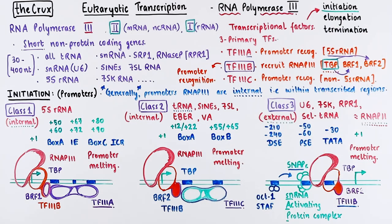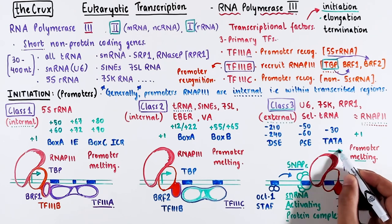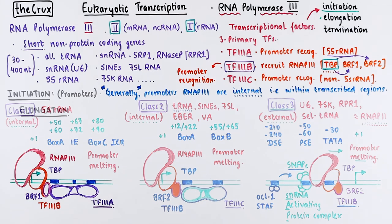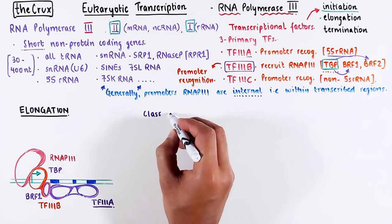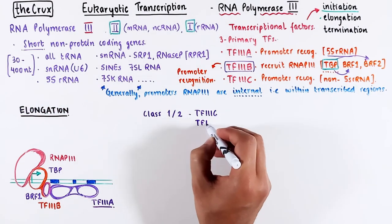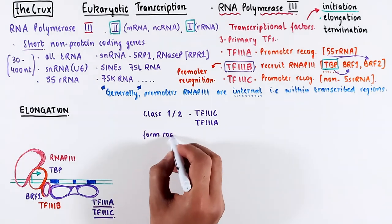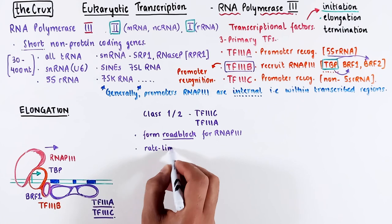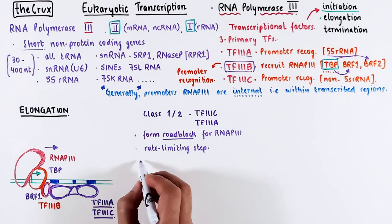Now, let's discuss elongation. Class 3 promoters immediately move into elongation if everything is set up in arrangement, making the elongation process less complex for this promoter class. However, there's a small catch for the internal class promoters. Both class 1 and class 2 have factor A or C in front of the polymerase, creating a roadblock that must be cleared for movement.